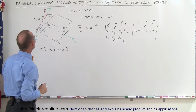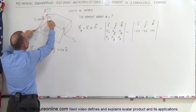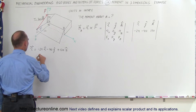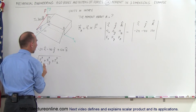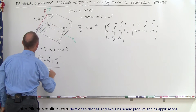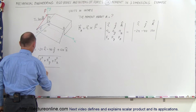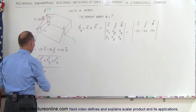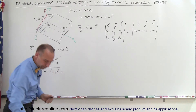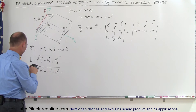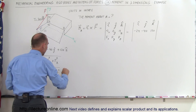To find the direction cosines, we first find the length of the string. The length equals the square root of the sum of the squares of the X, Y, and Z components. In X we go 24 inches, in Y we take 92 plus 40 which is 132 inches, and in Z it's 120 inches. So the length equals the square root of 24 squared plus 132 squared plus 120 squared, which equals 180.